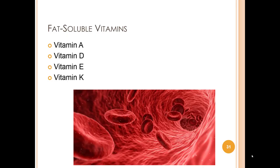Human breast milk contains ample quantities of most vitamins to support normal infant growth and development, with the exception of vitamins D, K, and B12. Vitamin A and E are present in adequate amounts. Vitamin A aids in retinal development and protects against infection. Vitamin E functions as an antioxidant and protects red blood cells against hemolysis.